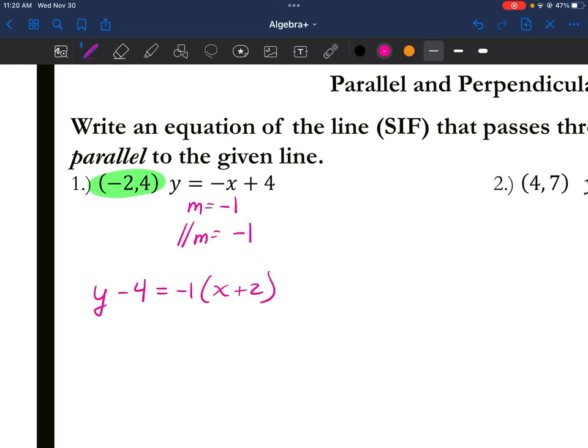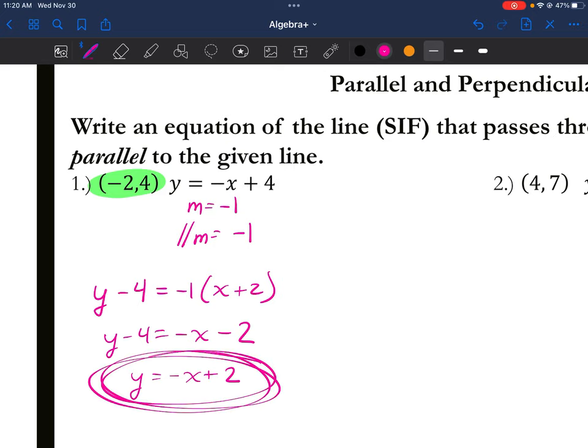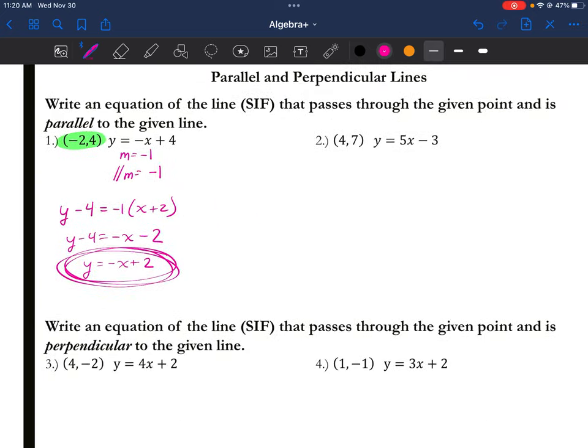Go ahead and rewrite this in slope intercept form by distributing, by adding. Guess what? This should be a 2 and then this should be a 2. So this is my parallel equation to the original problem.